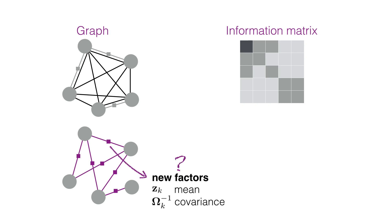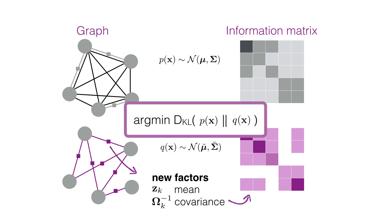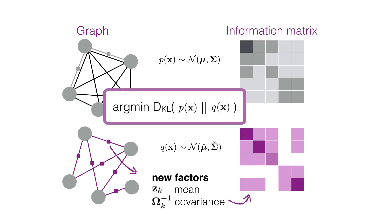Once a topology is defined, the mean and covariance, or equivalently information, of each new factor should be found. We want those values that minimize the Kullback-Leibler divergence between the dense distribution and the new approximated one.